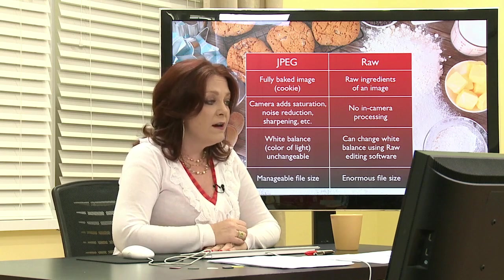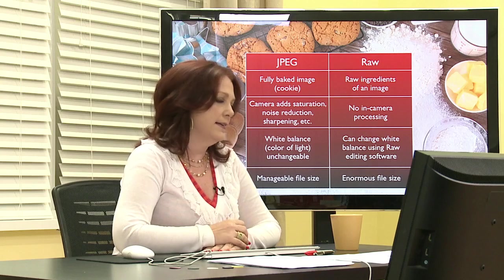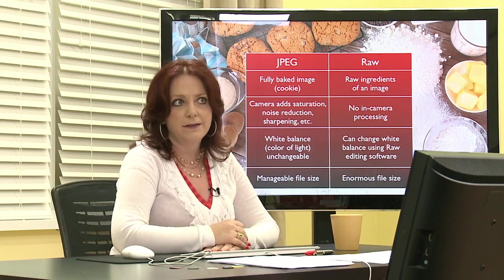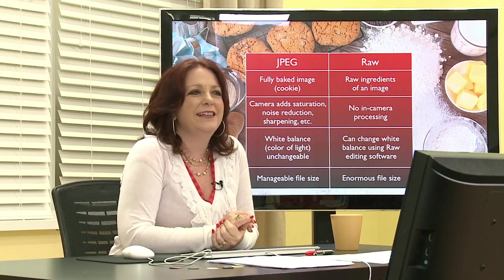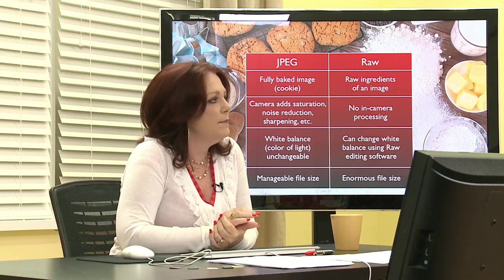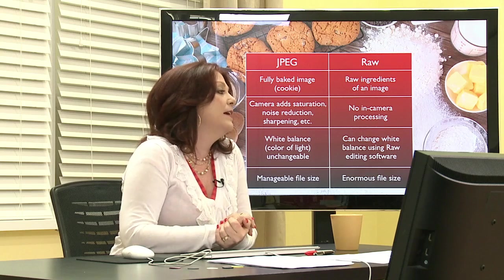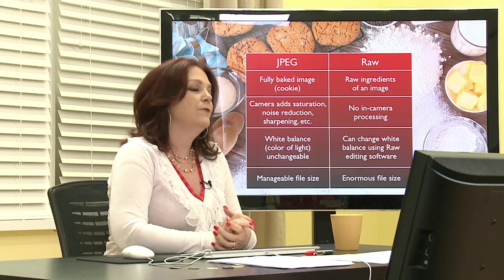One more thing to mention is that raw format produces enormous file sizes — gigantic, huge files. When you download the exercise files for this course, I don't think there's one under 10 megabytes. Depending on what camera you shoot with — I shoot with a Canon 40D — files can be even larger with a 5D and so on. JPEG produces a far more manageable file size because there's compression happening, so a tiny bit of the detail in your image is tossed to create a slightly smaller file size.